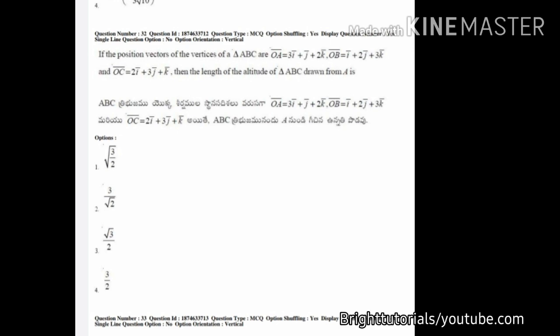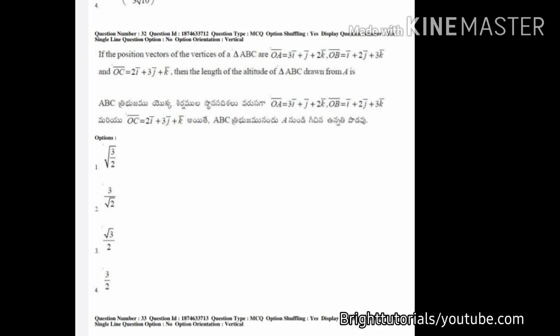In this next question, you can see that option two and option three are similar. In option two it is given as 3 by root 2, and in option four it is given as root 3 by 2. Options one and four are different, so you can choose any one option between two and three. The correct answer here is option number two.